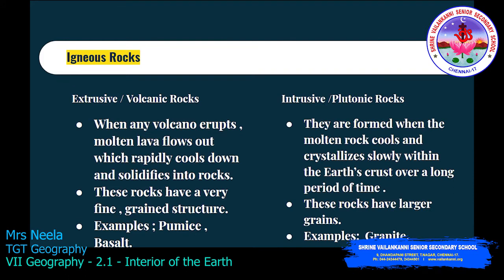Intrusive rocks are also called plutonic rocks. They are formed when molten rock cools and crystallizes slowly within the earth's crust over a long period of time. Unlike extrusive rocks, intrusive rocks undergo crystallization. These rocks have larger grains comparatively. An example of intrusive rocks is granite.